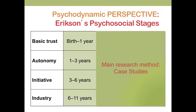According to Erikson, if autonomy is successfully resolved, we move on well-equipped to take initiative — to develop the ability to do things on our own. After this stage, we go on to developing skills through industry. This is school-aged children from about six to eleven years old, where we learn basic language and math skills, we learn social skills, we play on the playground, and we become increasingly developed human beings.